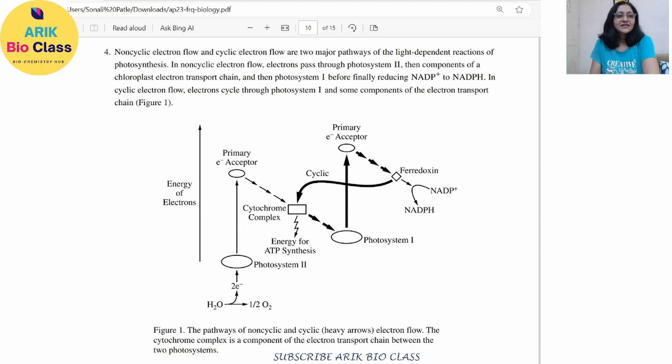So the question says, non-cyclic electron flow and the cyclic electron flow. These are the two major pathways of the light dependent reaction of photosynthesis. In non-cyclic electron flow,